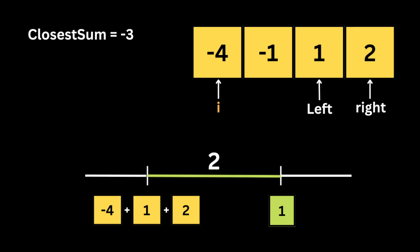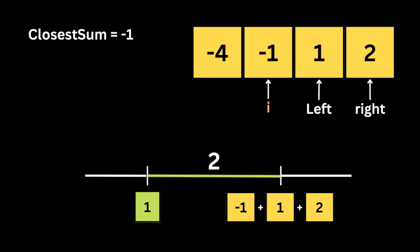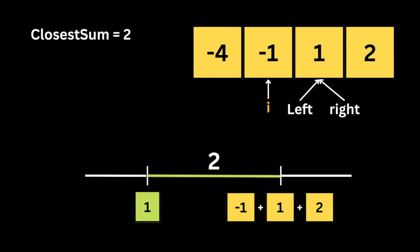Here the sum is less than the target, so we move the left by one and calculate the new sum, which is minus one. Since it's not equal to the target, we calculate the absolute difference between the current sum and the target, which is two, and compare it to the absolute difference of the previous sum. If smaller, we found three numbers whose sum is closer to the target, so we update the closest sum to minus one. We then repeat the process: the next sum is two. We check equality, then compare absolute differences. The closest sum gets updated to two. Since two is greater than the target of one, we move the right pointer left.